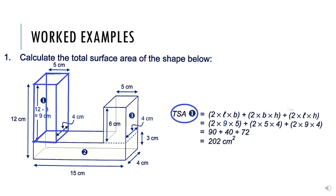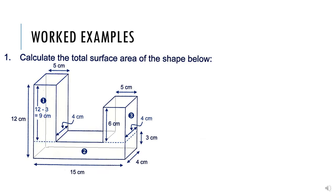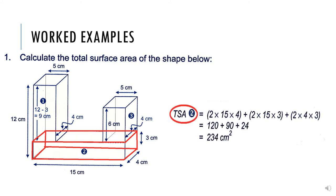However, a certain part of the prism will need to be left out because those surfaces are unexposed. In the next section, they calculate the total surface area of a second prism using dimensions of 15 centimeters, 4 centimeters, and 3 centimeters. Calculating the total surface area: 2 times 15 times 4, plus 2 times 15 times 3, plus 2 times 4 times 3 equals 234 centimeters squared.